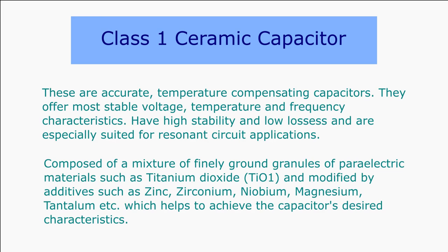Class 1 ceramic capacitors are accurate temperature-compensating capacitors. They offer stable voltage, temperature, and frequency characteristics. Ceramic capacitors have predictable variation of capacitance with temperature, offering high stability and low losses, and are especially suited for resonant circuit applications. The materials used in class 1 ceramic capacitors are composed of a mixture of finely ground particles of paraelectric materials such as titanium dioxide, modified by additives such as zinc, zirconium, niobium, magnesium, tantalum, etc., which helps to achieve the capacitor's desired characteristics.